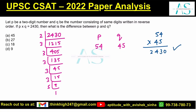What is the difference between these two? 54 − 45 = 9. That is the correct answer, and that is how you can tackle these questions. Option D is the correct answer.